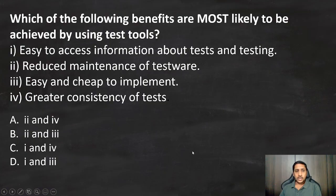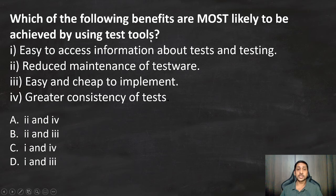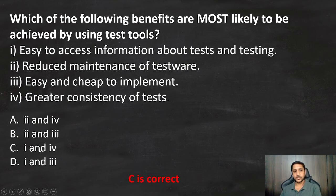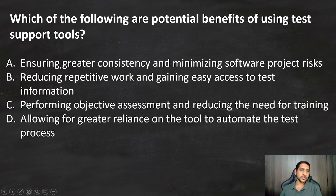Now let's look at a practice question: which of the following benefits are most likely to be achieved by using a test tool? Options include: easy access to information about test and testing, and reduced maintenance of tests. Options A and B are not the answer. Looking at C and D only: option three is 'easy and cheap to implement' and option four is 'greater consistency of tests.' We achieve consistency and easy access to information, so the first and fourth points are the answer — option C is correct.